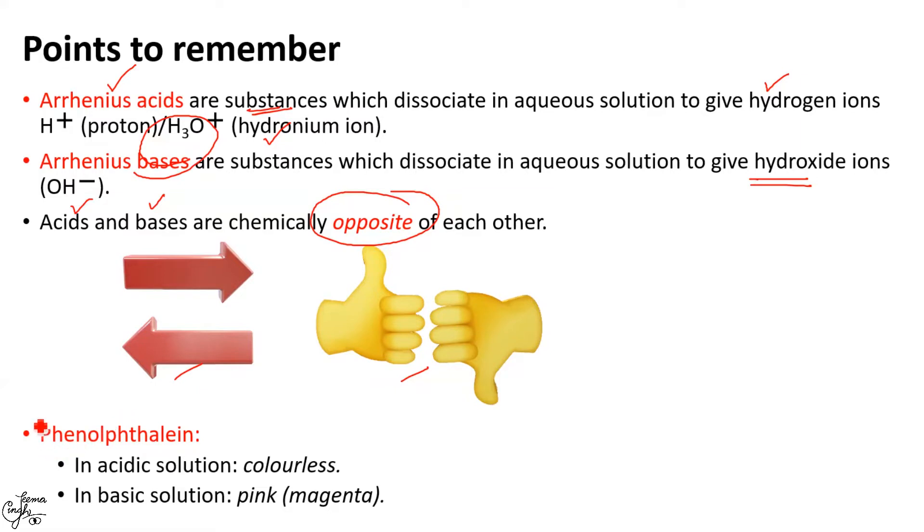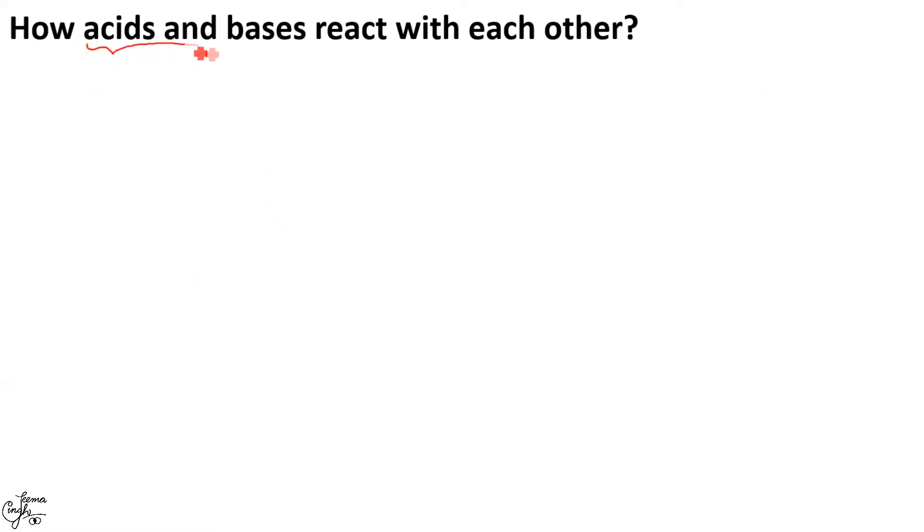And the last point you need to recall and remember is that phenolphthalein, a synthetic indicator, is colorless in acidic medium whereas it imparts pink color in basic medium. For further details on synthetic indicators, kindly refer to the link provided in the description box below. Now let us see how acids and bases react with each other. We already know that they neutralize the effect of one another.